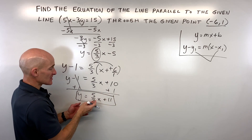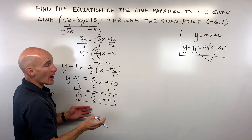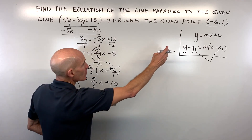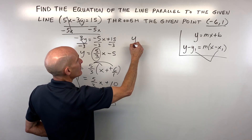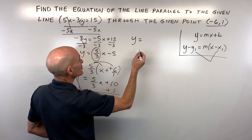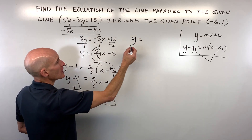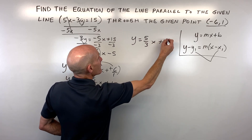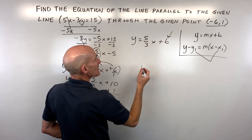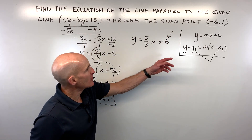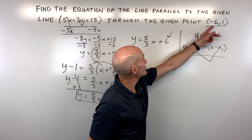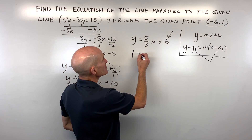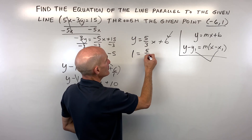And now it's in slope-intercept form. Some students might like to just start with the slope-intercept form. You could say, here's my slope-intercept form — I know I want my slope to be the same, 5 thirds, but I have to find my new y-intercept, my new b value. So let me go ahead and put negative 6 in for x and 1 in for y, and then solve for this b value.